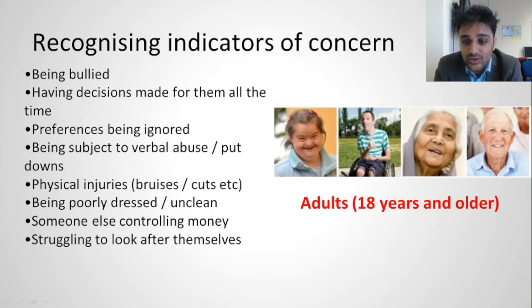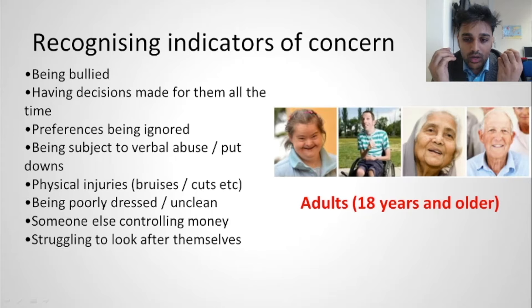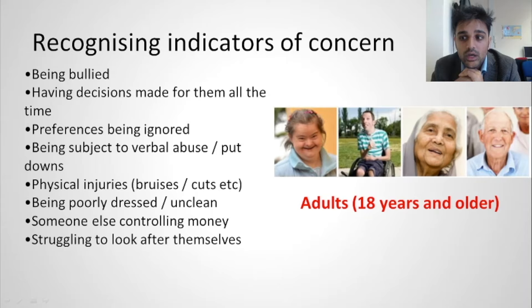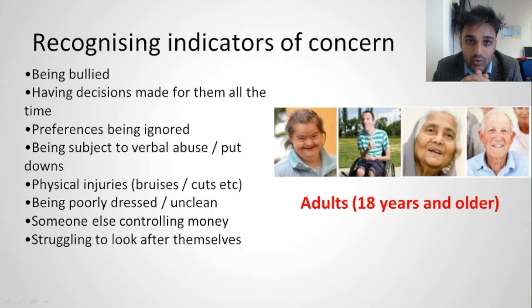Recognizing indicators of concern for adults 18 years or over. What kind of adults are we talking about? Disabled adults, and adults with mental illnesses such as Alzheimer's or dementia. They could be bullied — if you see someone with a mental illness being bullied, report it. Having decisions made for them all the time may indicate deeper issues. If their preferences are being ignored — someone says 'I don't want to do this' and is told 'you have to' — report it.